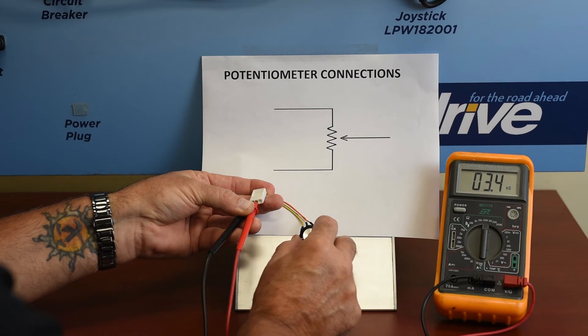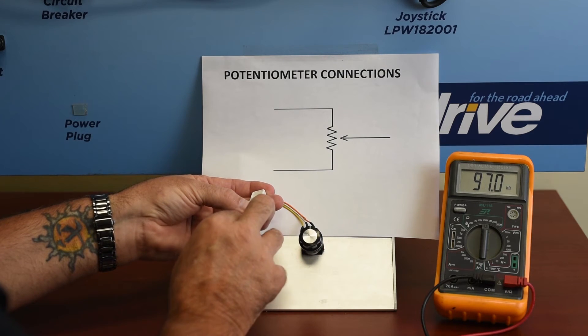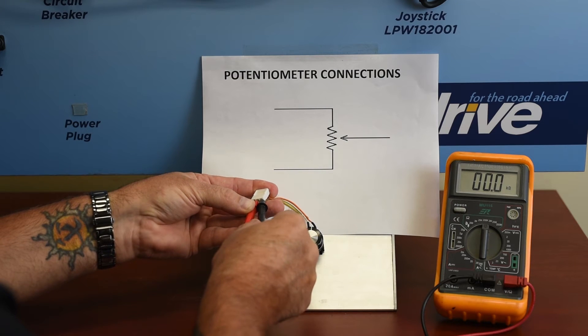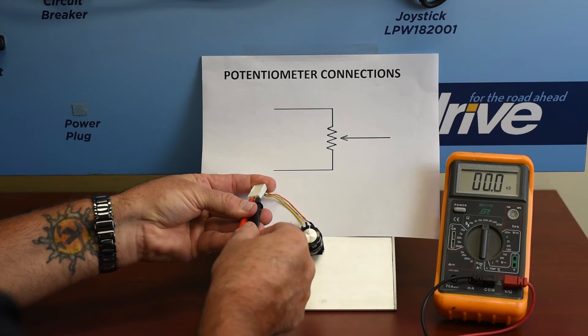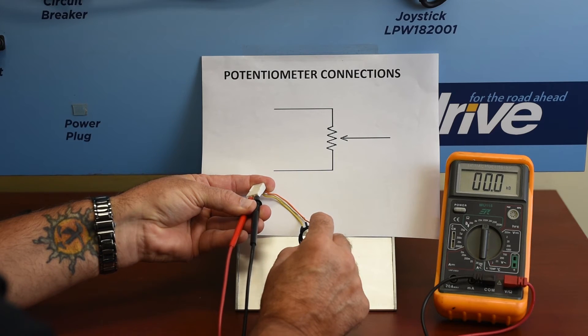We don't have any dead spots from the outside to that center, and we'll go all the way back to the other side, and we'll change over to the other side to the center. And we start with zero, and now this should increase all the way to the full resistance.